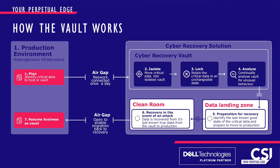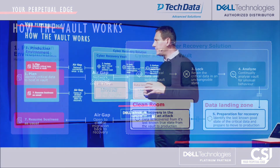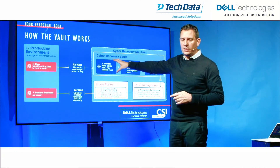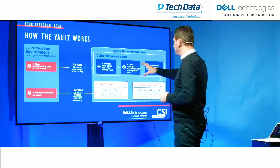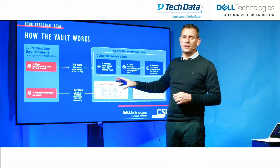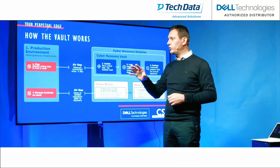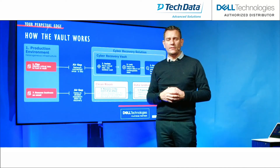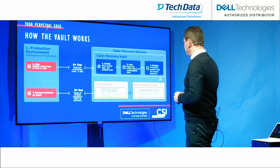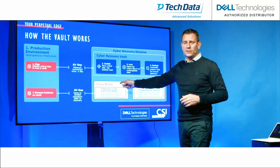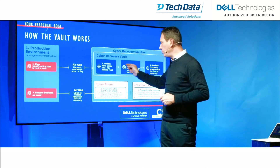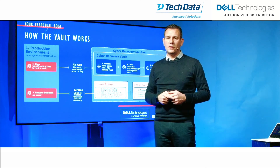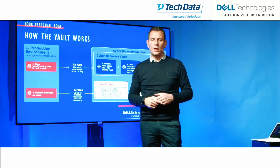The process to implement something like this is about planning — that's where CSI can really help clients work out what we need to protect and how we do it. We move into the cyber recovery vault, which is the isolation part, and then we lock it down. No one can touch it, no one can gain access to it, and we know it's a good copy. We do constant analytics on it to make sure nothing else is happening in that environment whilst it's in there. Then we move it into the landing zone, and only when we need to recover from an attack do we put it into the clean room and start the business again — resuming business as usual.